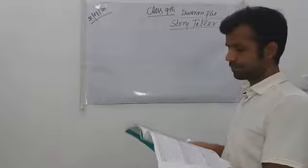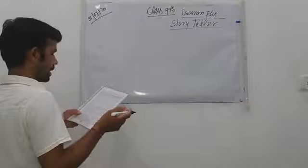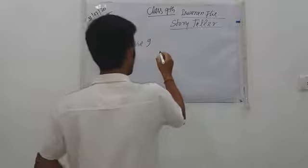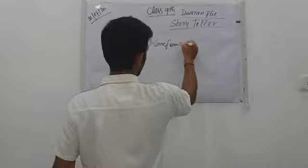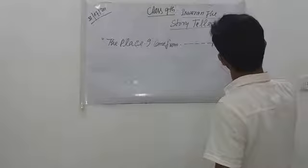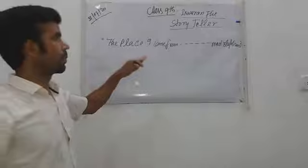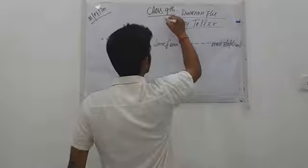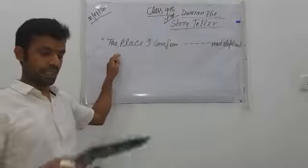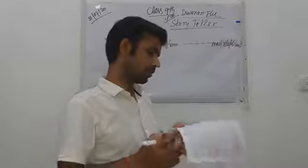So today we will discuss explanation of the passage, the place I come from, mad elephant. As you should know, I am going to explain class 9th, third chapter E. Swaran, the story teller. And we will explain the passage, the place I come from, mad elephant. So let's start.